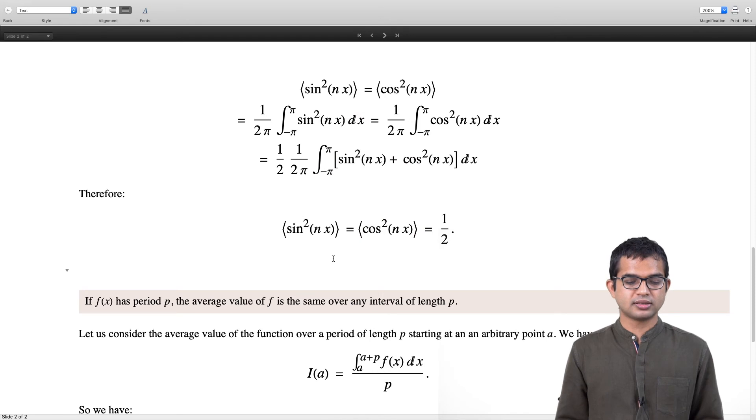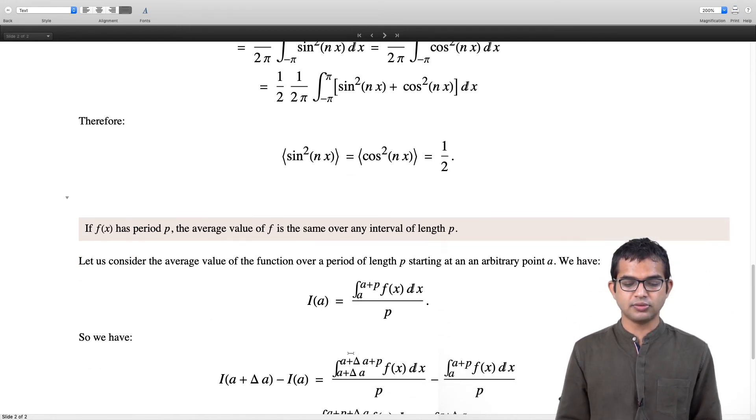The argument is the following. Let us consider the average of this function over a period of length p starting at some arbitrary point. I am interested in this integral from a to a+p of f(x)dx, and then I have to divide by the length of the interval, which is p. So I(a)—you would think that this is, a priori, you might expect this to be dependent on a. But let us look at what happens if I compute this at some other point a + Δa. This Δa does not have to be infinitesimal; I am just considering some other point which is at a distance Δa away from a.